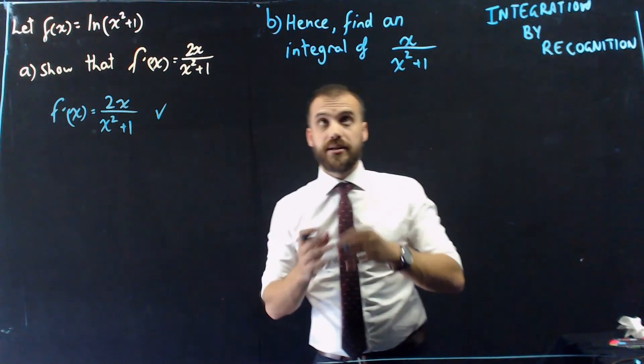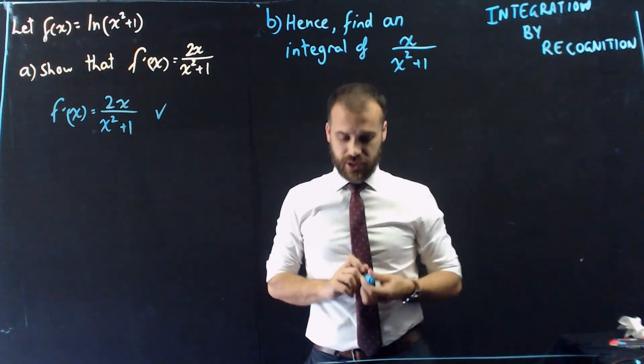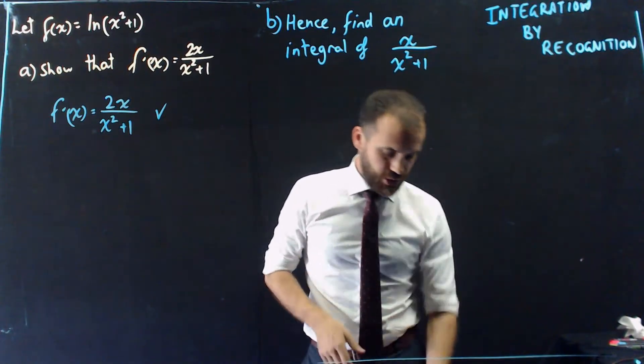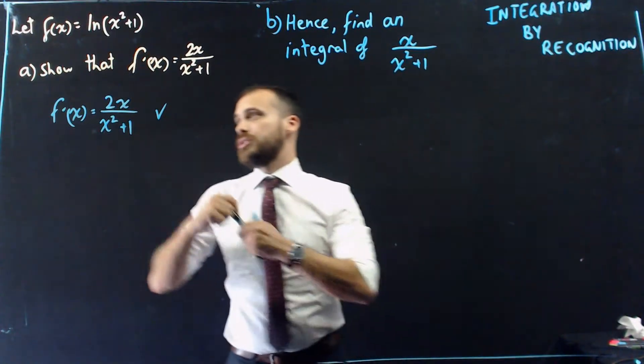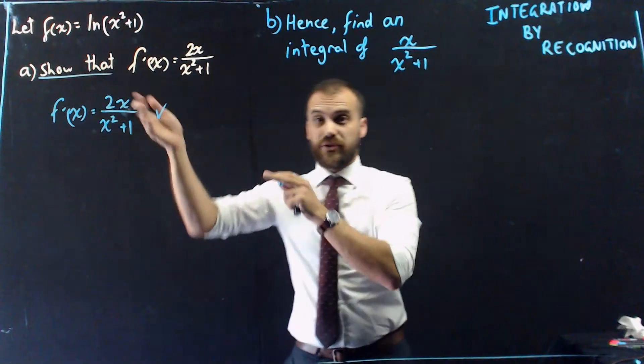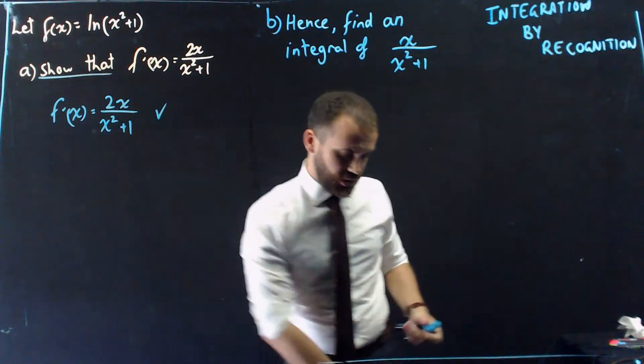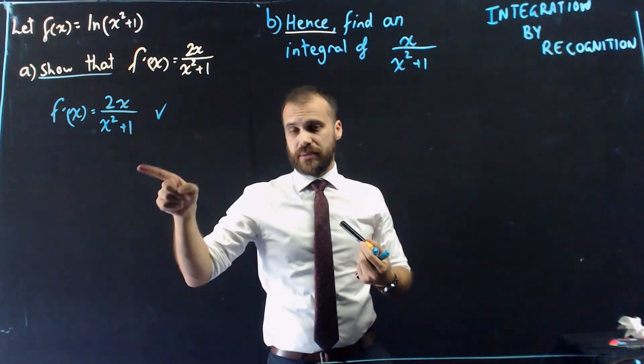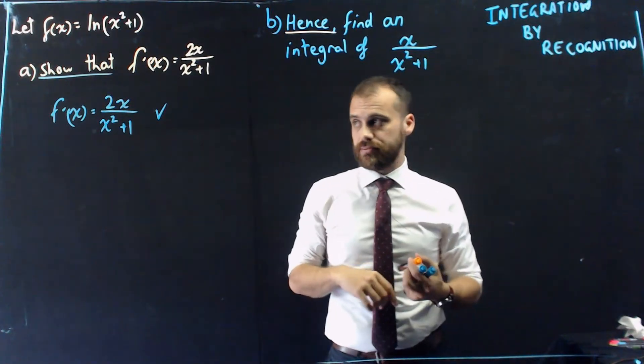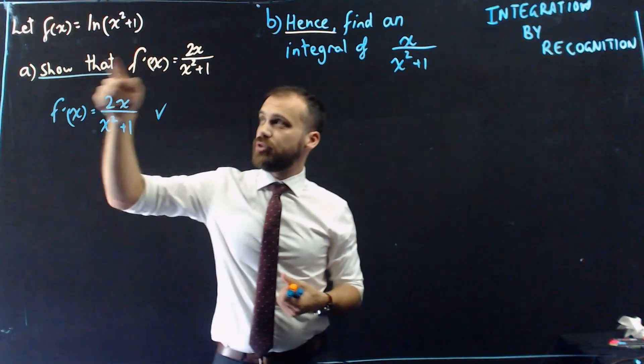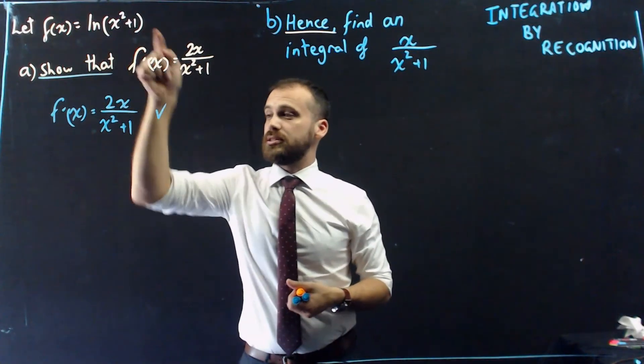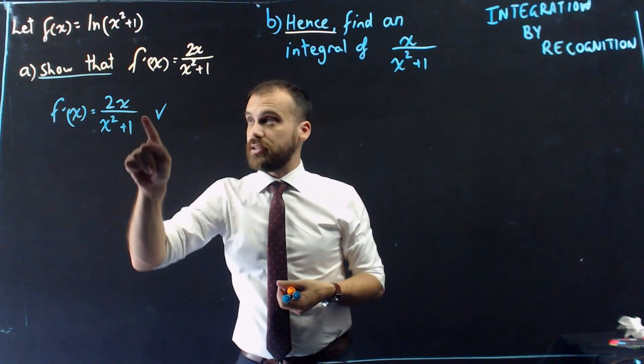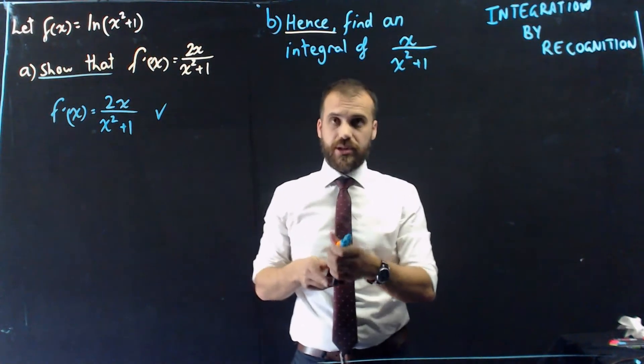Now, part B. Hence, find an integral of x on x squared plus 1. Now, when I say all the questions are the same, they really are all the same. So you're going to see the words show that, and you're going to have to do a derivative, and then usually you have like a hence. Hence means using the previous information, you should now be able to solve this. So if the derivative of that is that, that means the integral of that is that. And that's what we rely upon here.